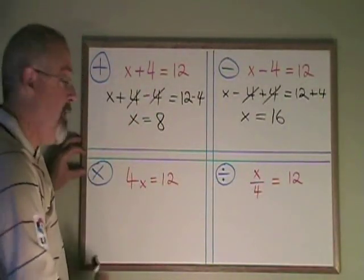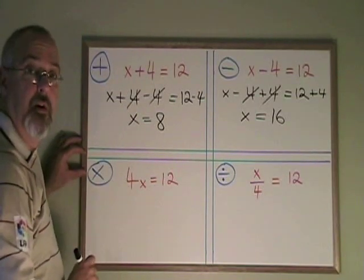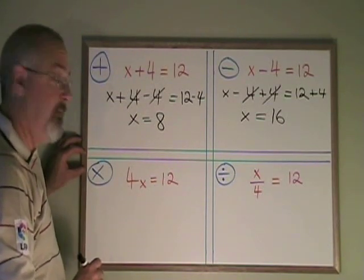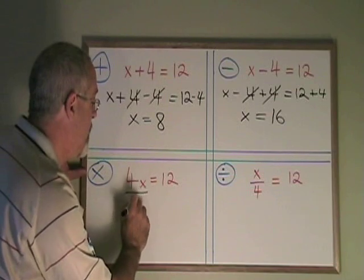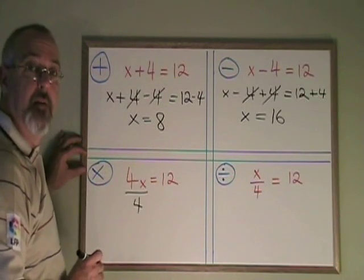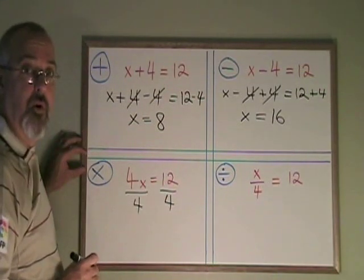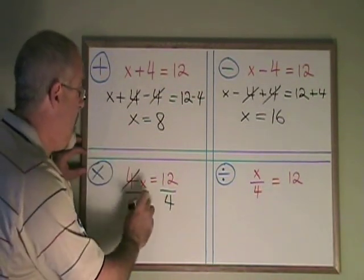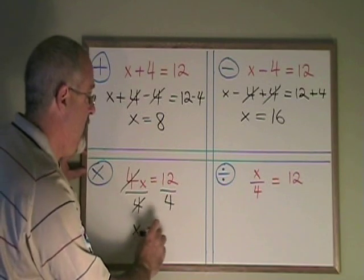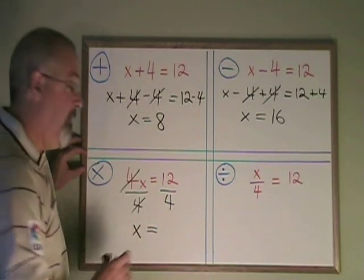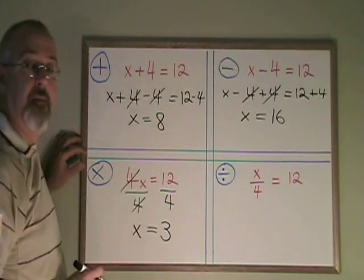Multiplication. Here the x is being multiplied by a 4, and the opposite of multiplication is division. So I have to divide that side by a 4. But if I'm going to divide the left side by a 4, I also have to divide the right side by a 4. These cancel. My x is isolated and is equal to 12 divided by 4, which is 3. I have my answer.